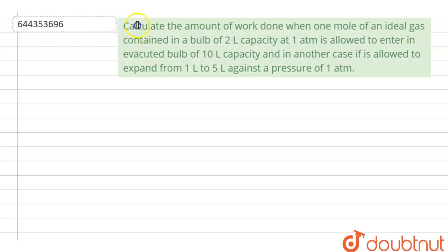The question given here is, calculate the amount of work done when one mole of an ideal gas contained in a bulb of 2 liter capacity at 1 atmosphere is allowed to enter an evacuated bulb of 10 liter capacity, and in another case, if it is allowed to expand from 1 liter to 5 liter against a pressure of 1 atmosphere.